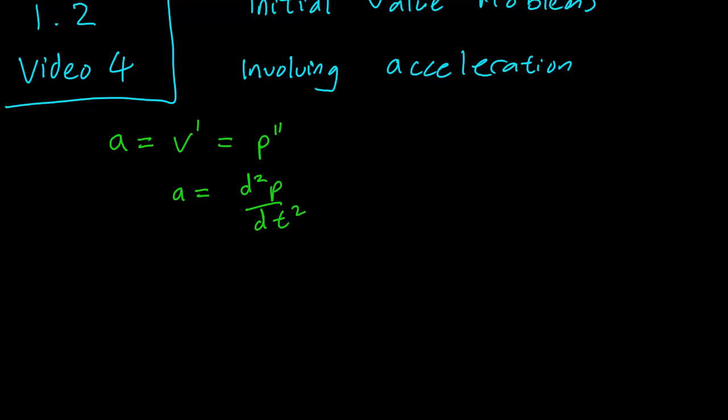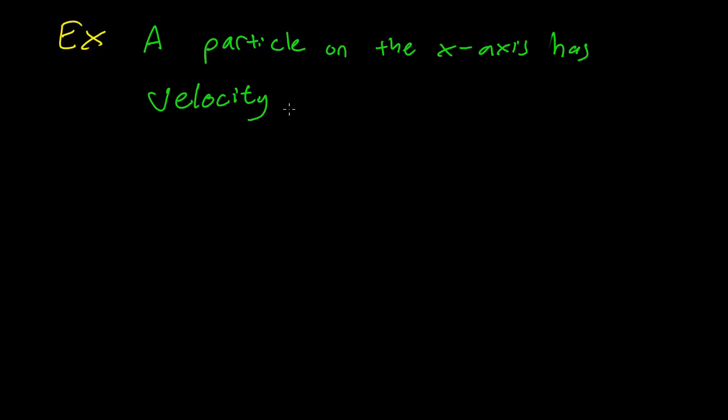So let's try an example. A particle on the x-axis has velocity 2 meters per second and position minus 1 meter at time 0.